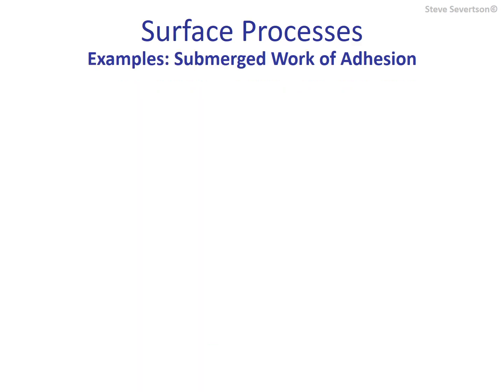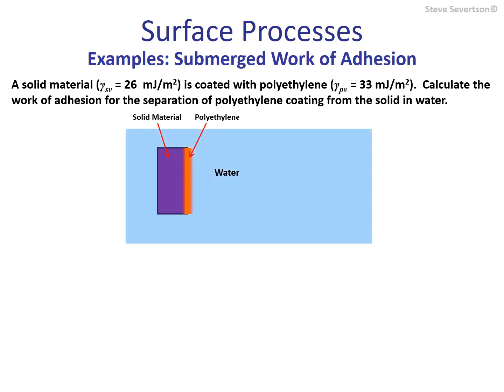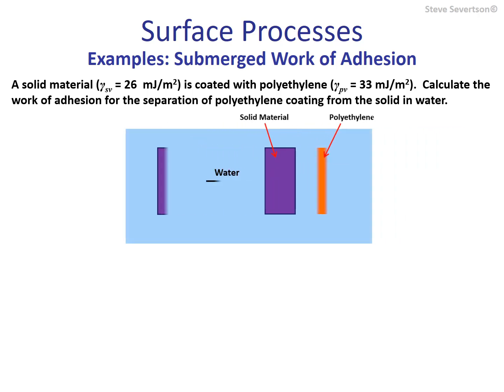This slide reviews an example where we demonstrate the calculation of the thermodynamic work of adhesion in an aqueous environment. A solid material with a surface energy of 26 millijoules per meter squared is coated with polyethylene, which has a surface energy of 33 millijoules per meter squared. We are asked to calculate the thermodynamic work of adhesion for the separation of the polyethylene coating from the solid in water.